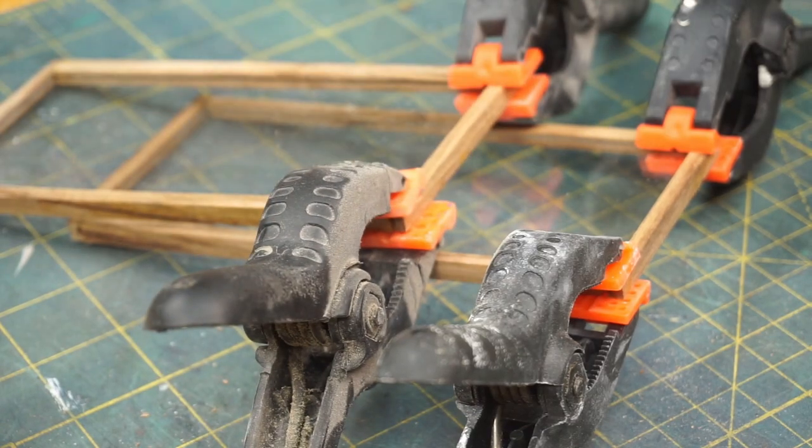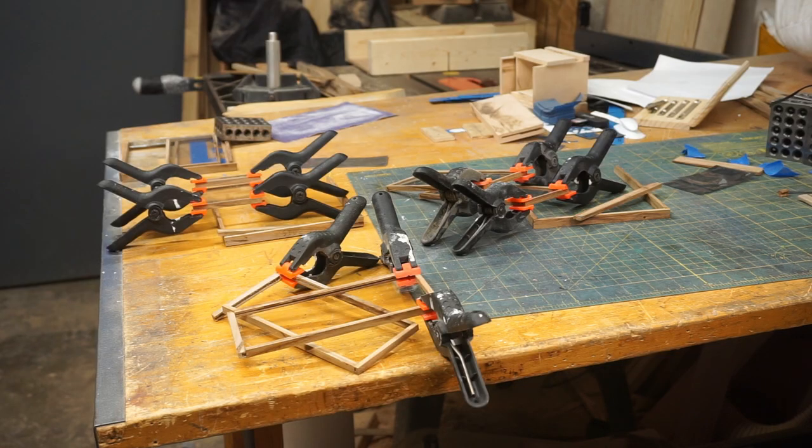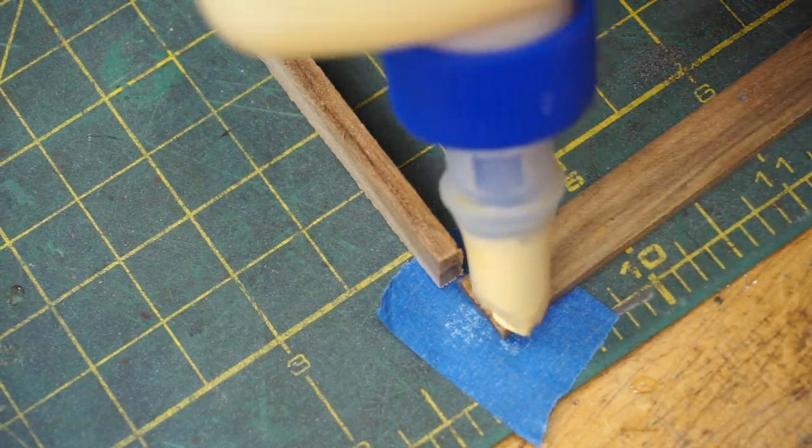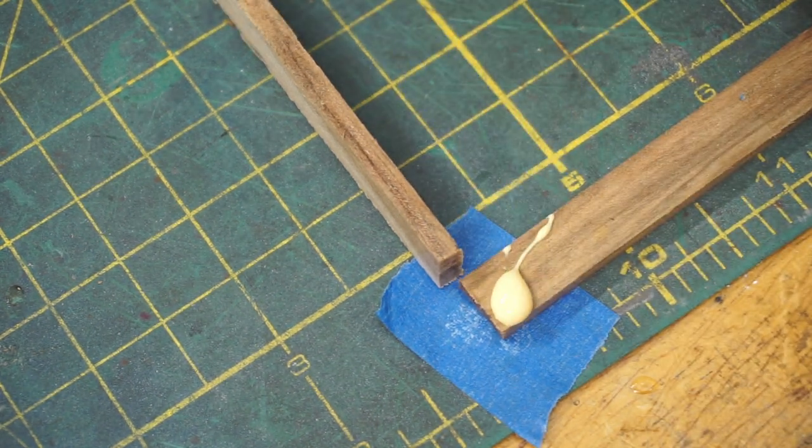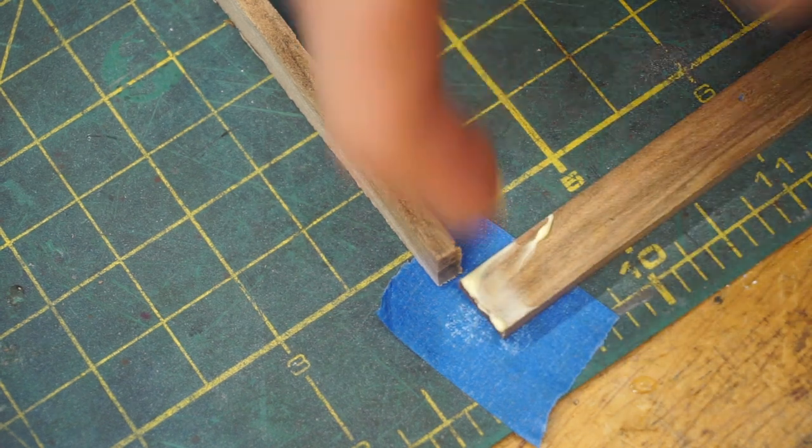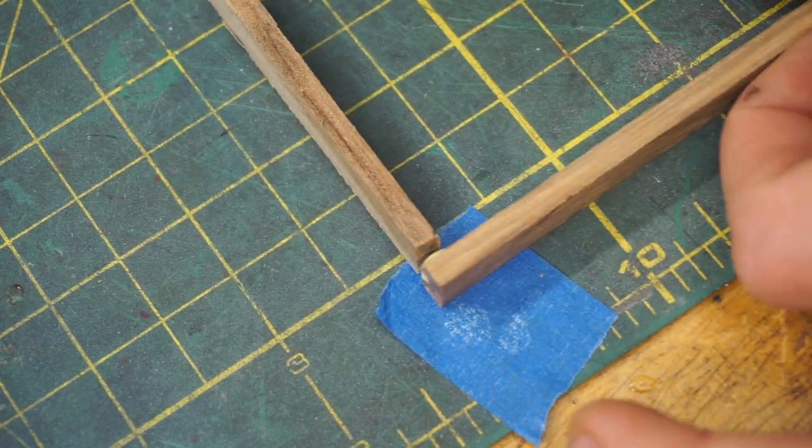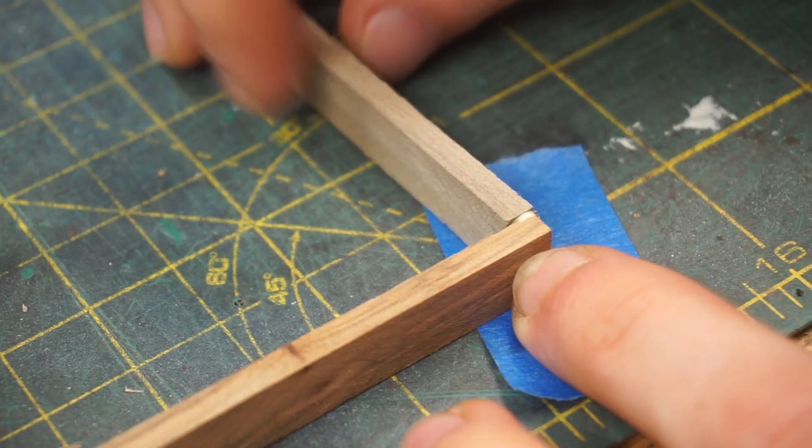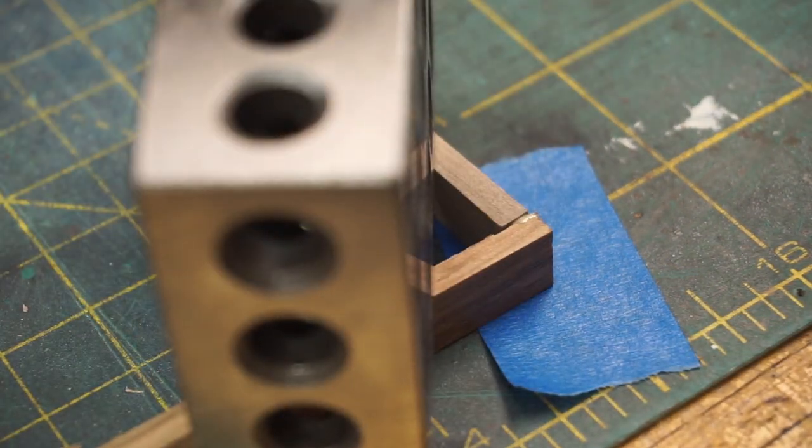I needed eight of these frames in total, two for each sliding glass door. Also at this point, I glued together the outer frames. Now with all the subassemblies complete, I began to think about the door sliding mechanism.